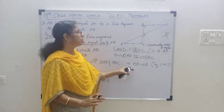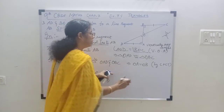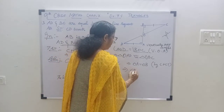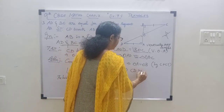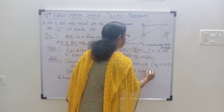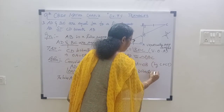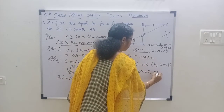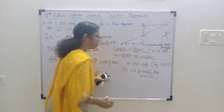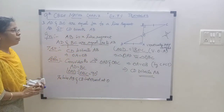OA is equal to OB. This again implies CD bisects AB. CD bisects AB. That's all. Hence, the proof.